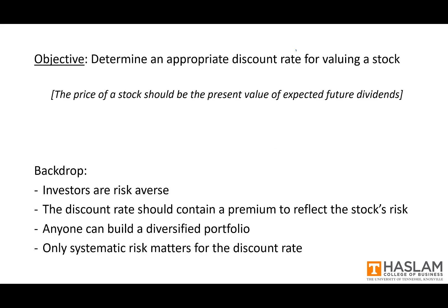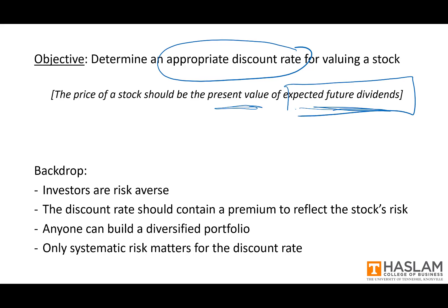When thinking about what a discount rate should be, let's start by backing up just a bit and recalling that the price of a stock should be the present value of all expected future dividends. In any present value calculation you really need two things: you need cash flows — here it's expected future dividends — and you need a discount rate. The discount rate is what we're working on today, and in stock valuation you'll see the present value formula take a number of forms.